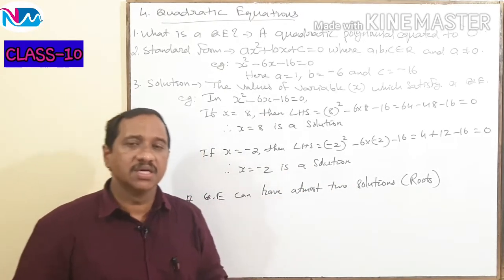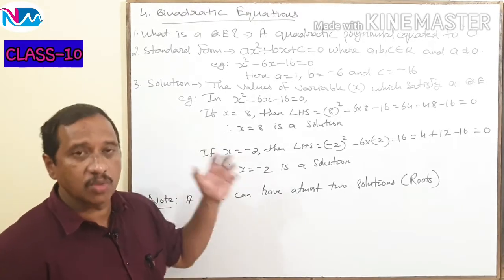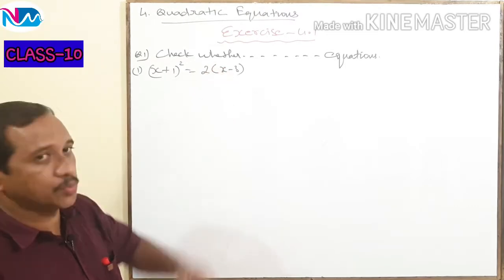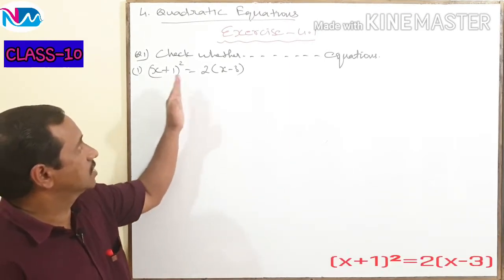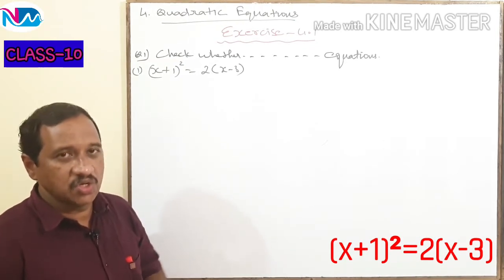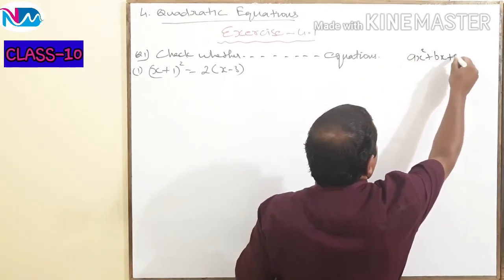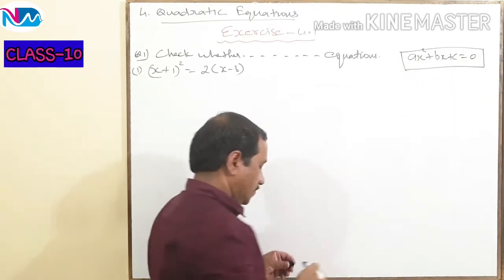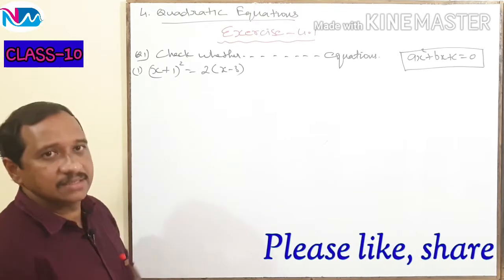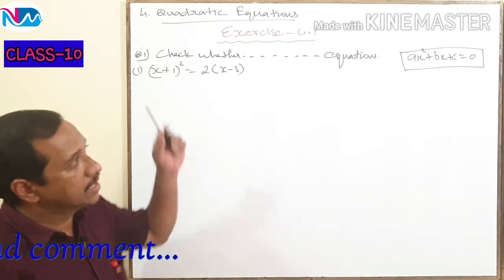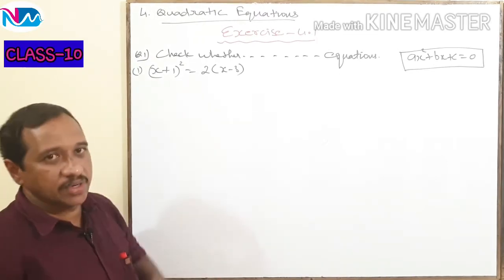So these are the basics required for starting this lesson. Now we will go to exercise 4.1, which is based on the standard form of a quadratic equation. The first question of exercise 4.1 is: check whether the following are quadratic equations. The first equation given is (x + 1)² = 2(x - 3). We know the standard form of a quadratic equation is ax² + bx + c = 0. We are going to simplify this equation using a suitable identity, then try to express it in the form ax² + bx + c. If we succeed, then the given equation is a quadratic equation.